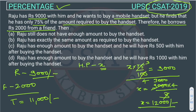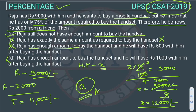Now reading the options: Raju still does not have enough amount to buy the handset — this is right. The second option: Raju has exactly the same amount as required — this is wrong. Raju has enough amount — Raju is not having enough amount, so this is also wrong. Raju has enough amount to buy the handset and will have Rs.1,000 with him after buying — this is also wrong. So the correct answer is Option A. I hope you all understand.